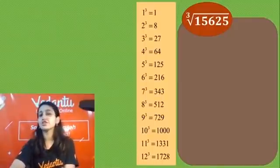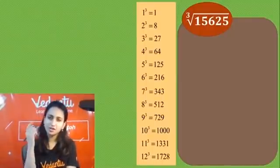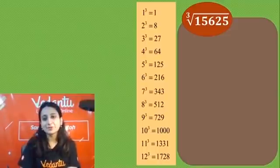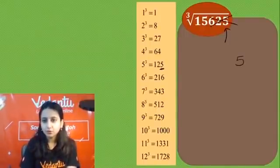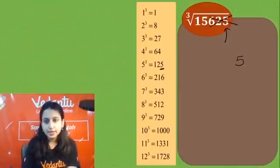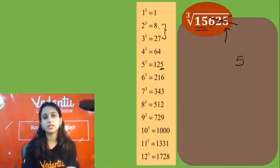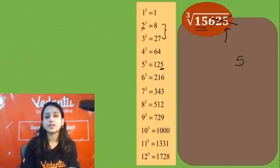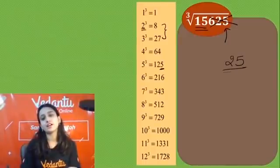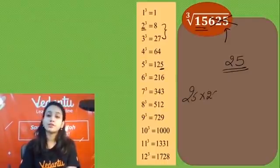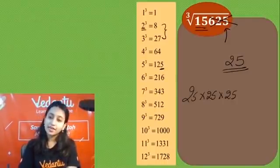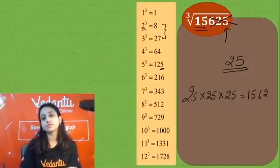Chalo, aap bhi karo mere saath — even before me! Ones place has 5, and 5 corresponds to 5. Discard 3 digits, left with 15. Where does 15 lie? Right here — between 8 and 27, i.e., between 2³ and 3³. Take the smaller: 2. So 25 is the answer. Verify it: 25 × 25 × 25 is definitely going to be 15625!